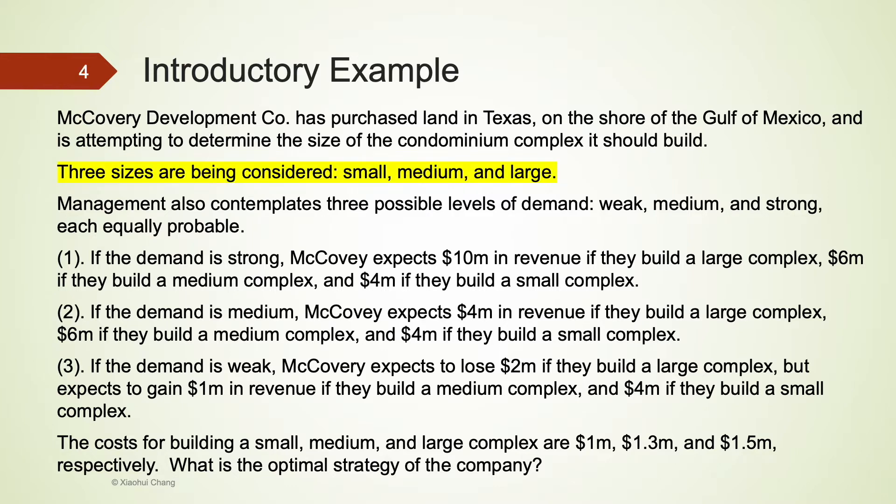The company needs to make a decision on the size of the apartment complex they should build. There are three different sizes: small, medium, and large. There are three alternative actions the company can take.